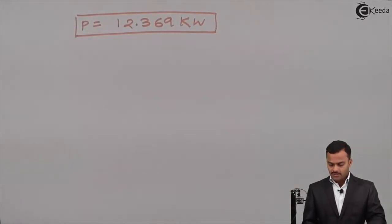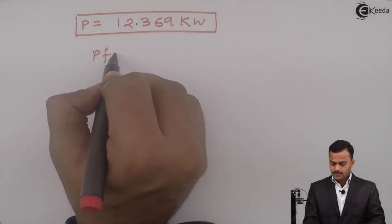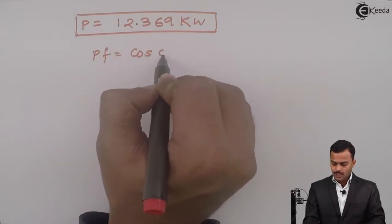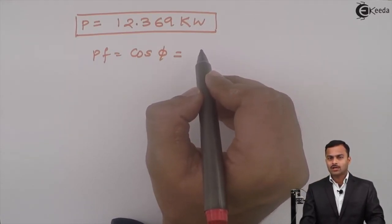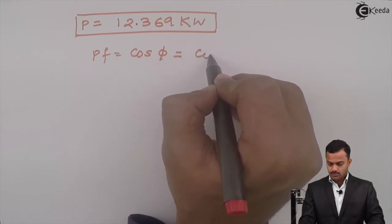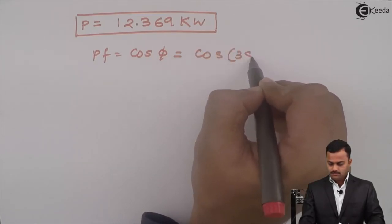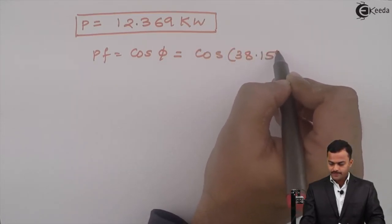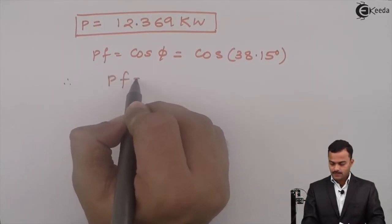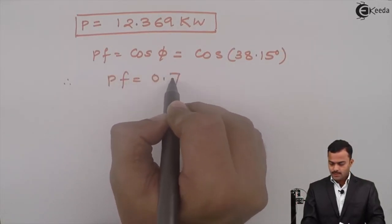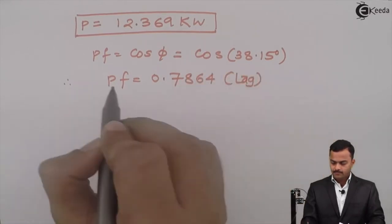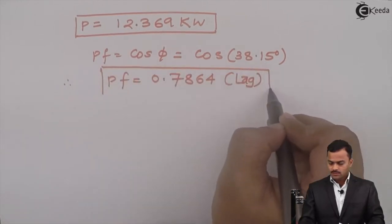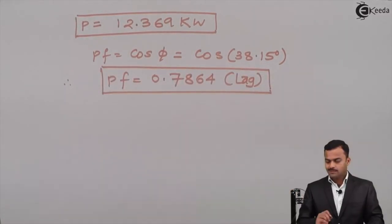You can get the power factor also. It's very simple - power factor is cos phi. Phi is the angle of Zph, which is cos(38.15 degrees), so power factor is 0.7864. The nature will be lagging because it's a coil given, and a coil is an inductive circuit.